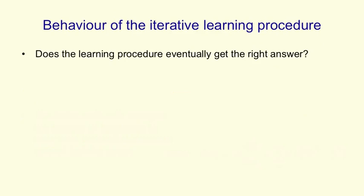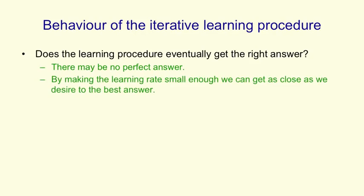Now we can ask how this learning procedure — the delta rule — behaves. Does it eventually get the right answer? There may be no perfect answer; it may be that the linear neuron is given training cases with desired answers and there's no set of weights that gives the desired answer. There's still some set of weights that gets the best approximation on all those training cases, minimizing the error measure summed over all training cases. And if we make the learning rate small enough and learn for long enough, we can get as close as we like to that best answer.